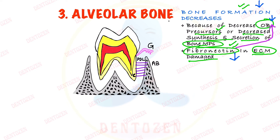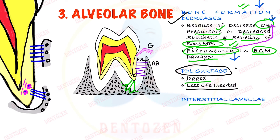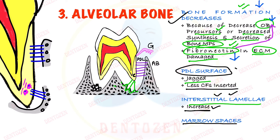Decreased bone formation is the first change in alveolar bone. The periodontal ligament surface of this bone becomes jagged and rough with sharp areas, so fewer collagen fibers of the PDL are attached to it. The number of interstitial lamellae in the haversian system increases with age. And the marrow spaces in the trabecular bone become infiltrated by fat cells, so the marrow becomes fatty with age.